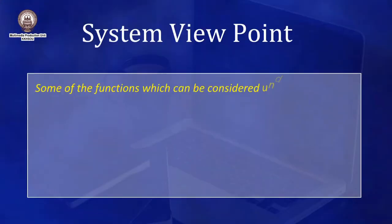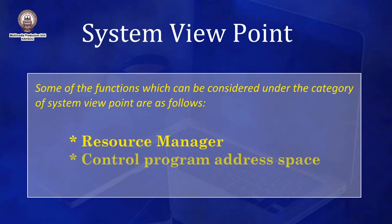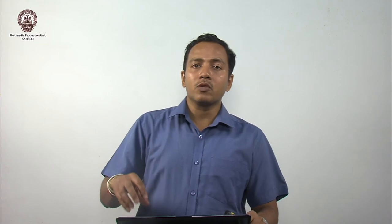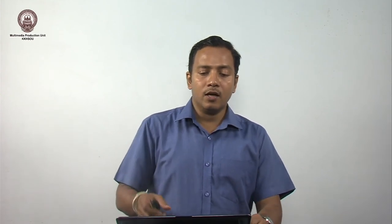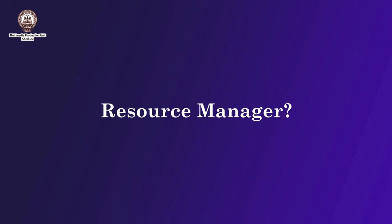Now let us talk about the functions from the system viewpoint. The first one is the resource manager. Resources include different hardware components such as the CPU, cache memory, RAM, hard disk, printer, and scanner. Whenever a user wants to make use of those resources, the operating system allocates them to the user or the program. This function is known as the resource manager — it is not a human being, but a function present inside the operating system.